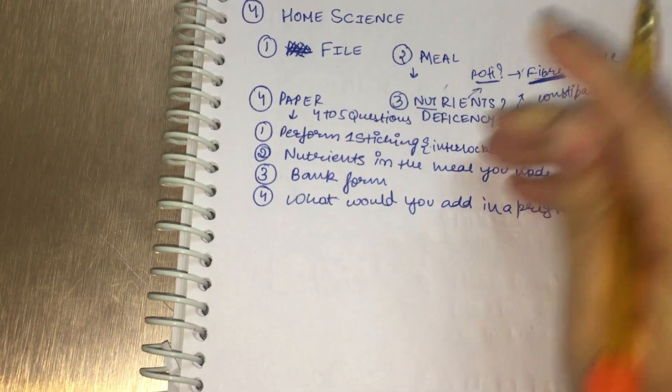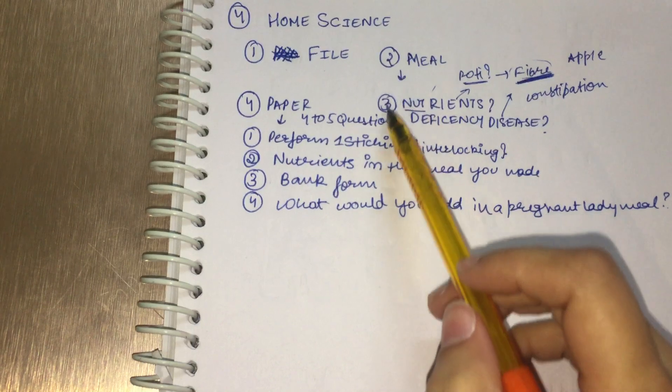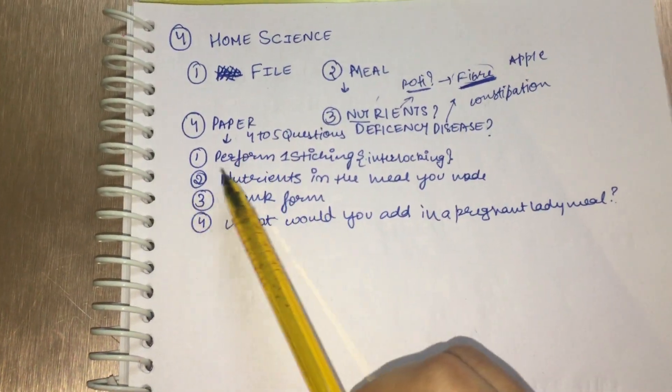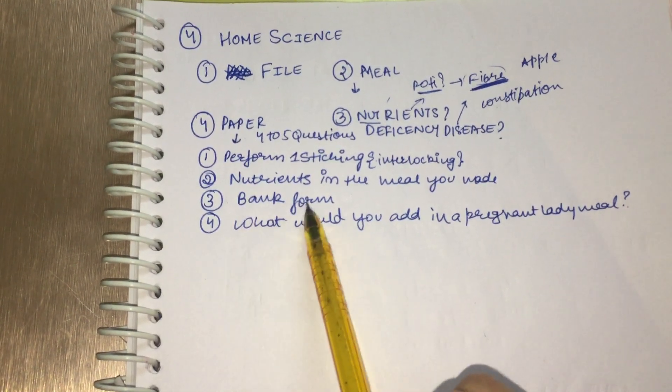They can ask you about anything, like apple or anything - what are the nutrients, what is the deficiency disease. Next thing is about the paper. You have to give a written paper also, in which you have to bring a bank form.